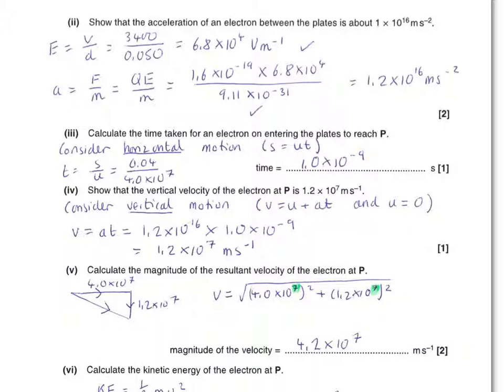Now, acceleration is force per unit mass. Once we know an electric field strength, the force on any charge will be its charge times the strength of the field. Substitute those values and divide by the mass of the electron. This was a show that question. So, the mark is for this correct substitution. And you need to show it.